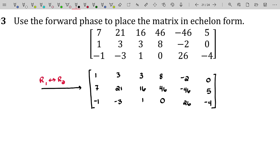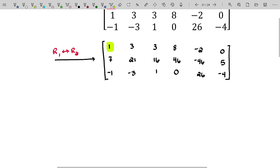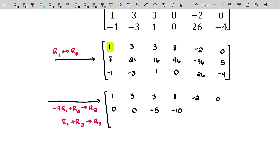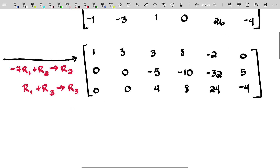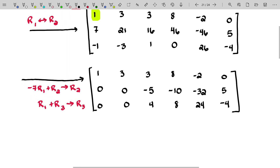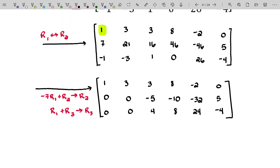We have chosen our pivot for the first column — column one is the pivot column. I'm going to use that pivot to kill off everything below it. I'll take negative seven times row one added to row two, and I'll take row one and add it to row three to become the new row three. I spent a little extra time making sure I did all my arithmetic correctly.